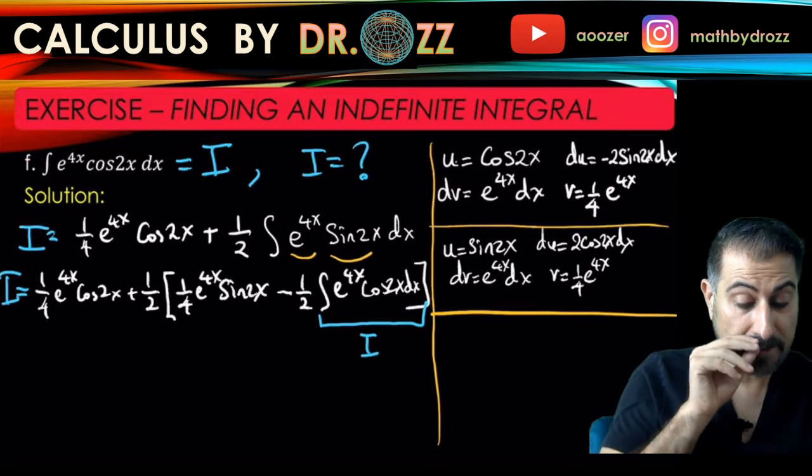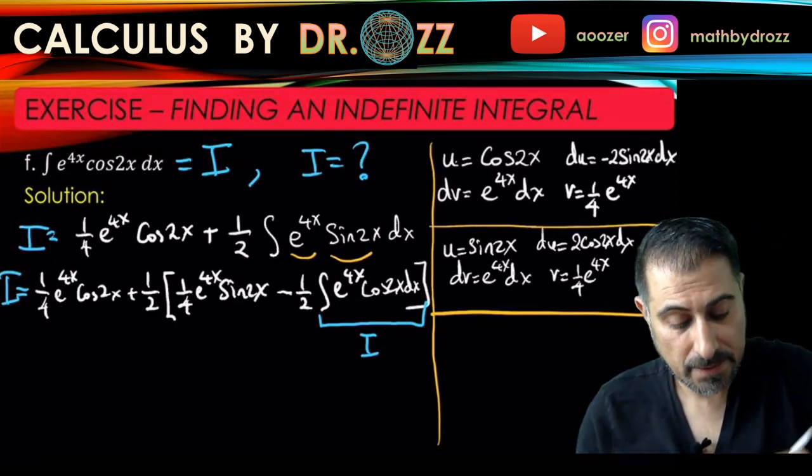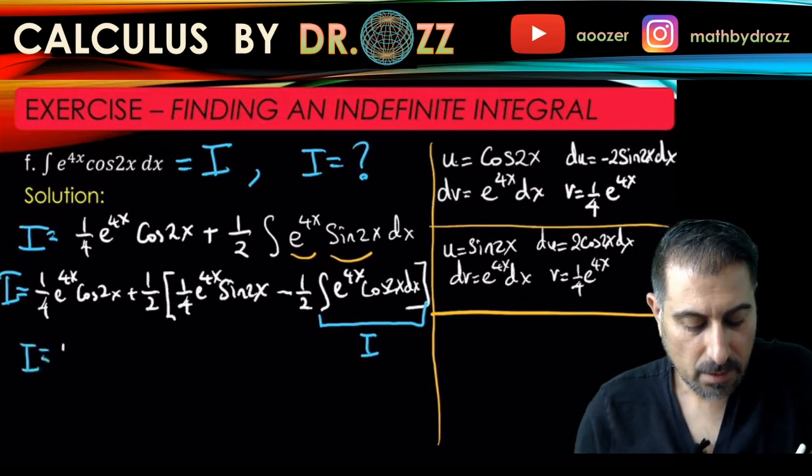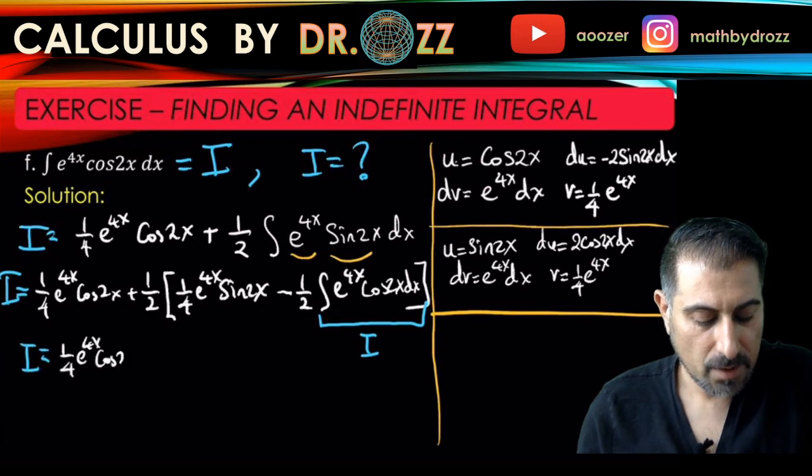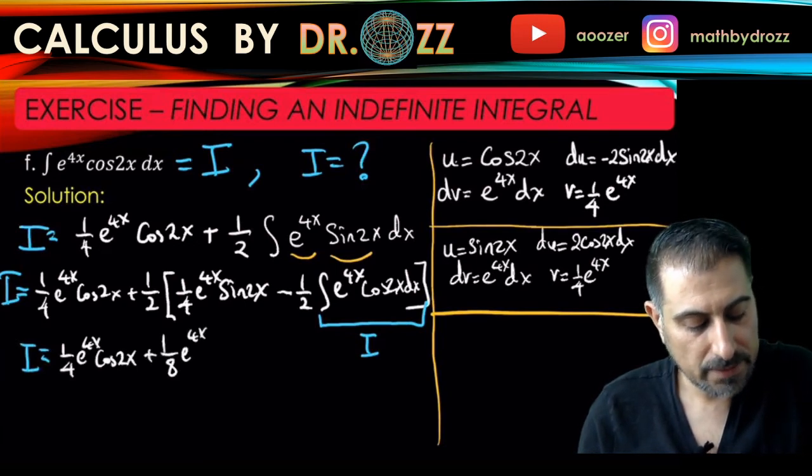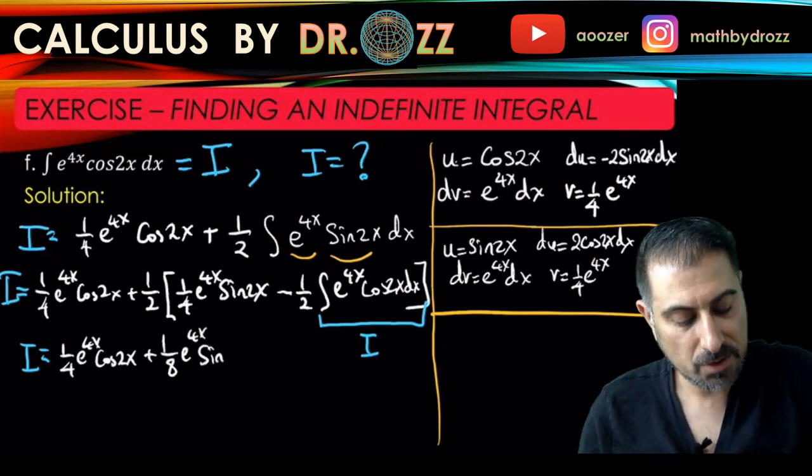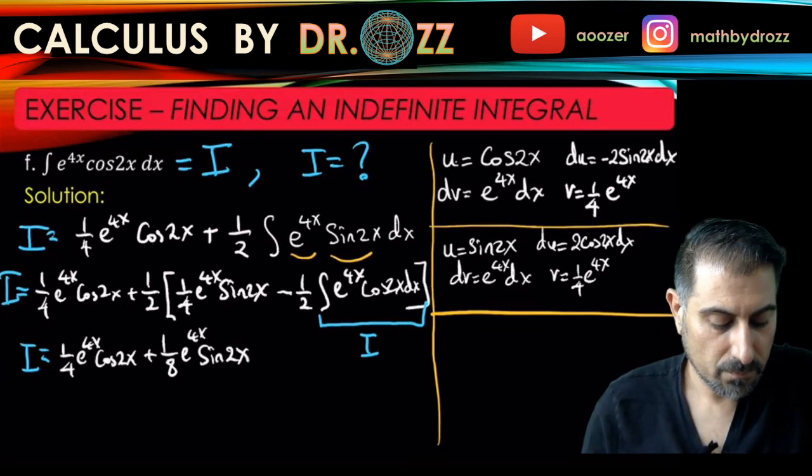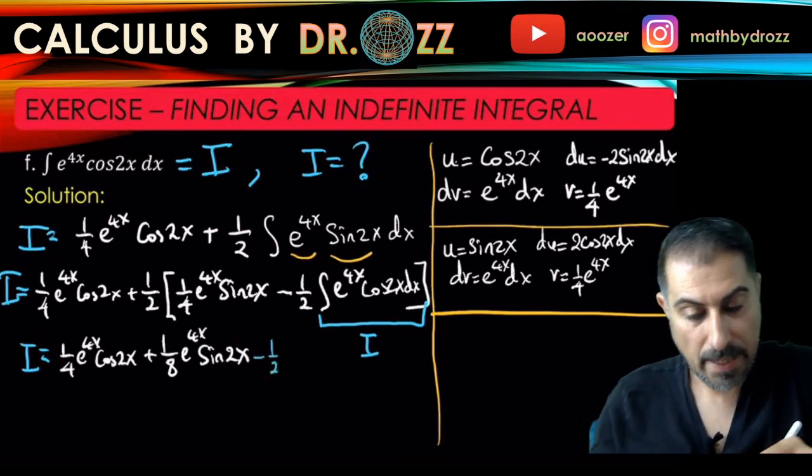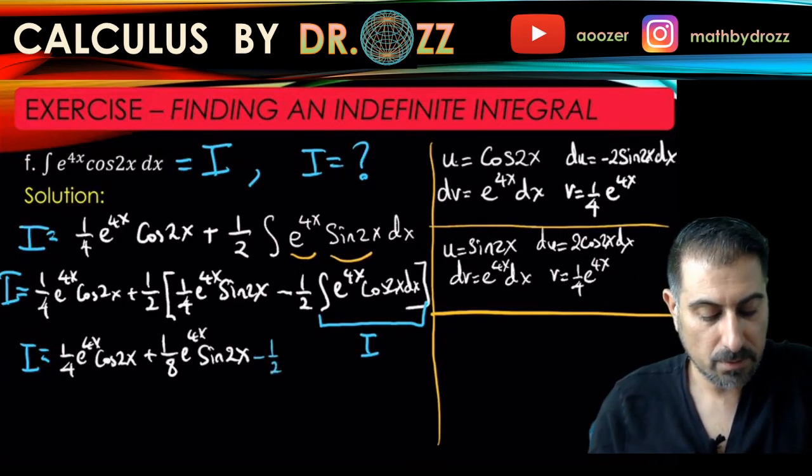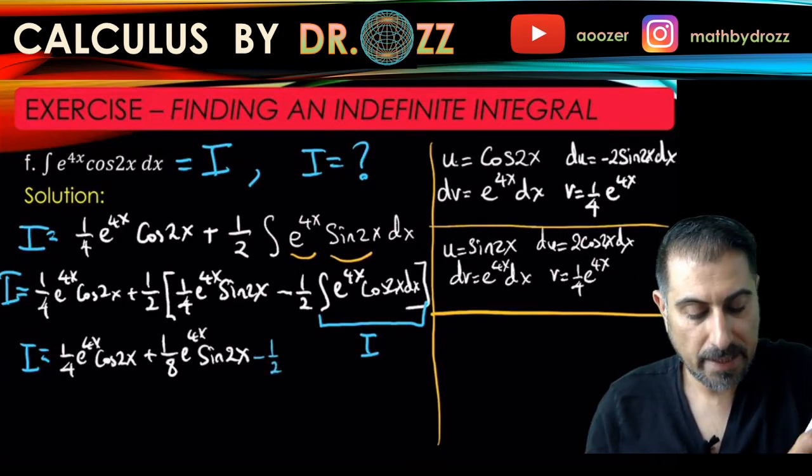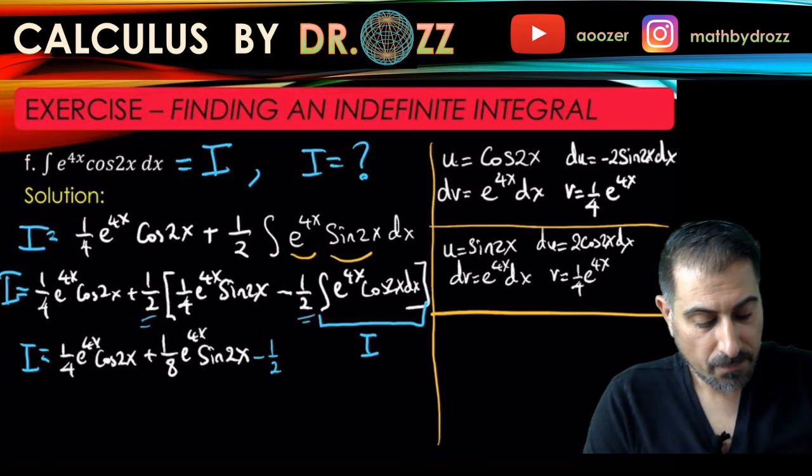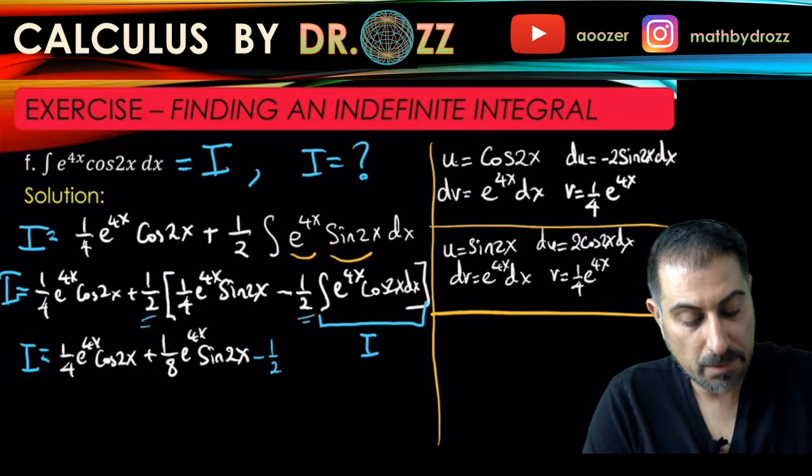Let's rewrite that. Let's expand the right-hand side to see what's going on. I equals one-fourth e to the 4x cosine 2x plus one-eighth e to the 4x sine 2x, and I have minus one-half I. Let me write that with blue. Minus one-half, but also you have one-half out here, so you have in fact one-half here, another one-half here. It's almost like one-quarter minus one-quarter, so you gotta be very careful.